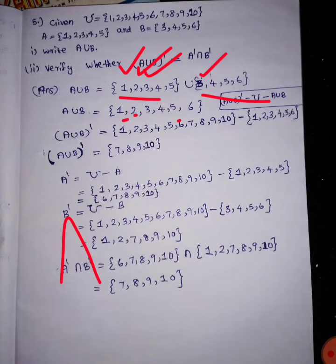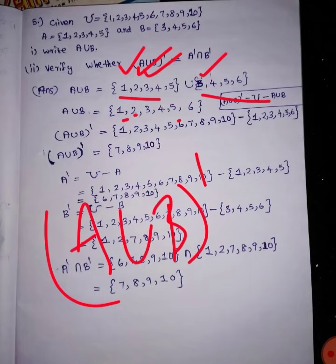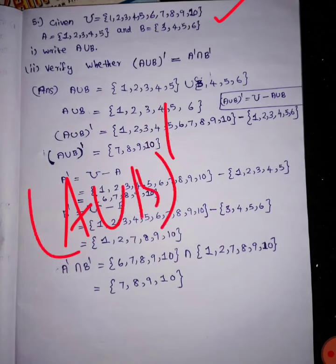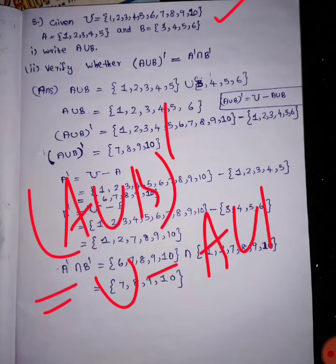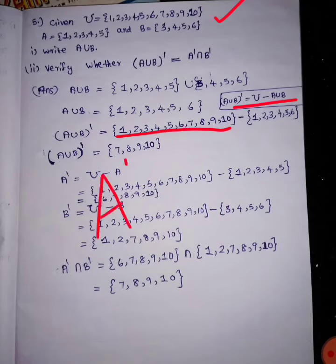Now let's see A union B all dash — the complement. What is the name? This is A union B all dash. Simple. Universal set — A union B all dash.